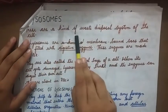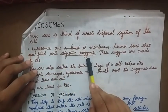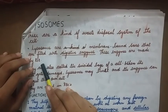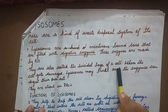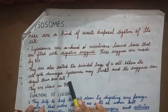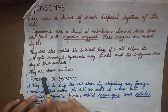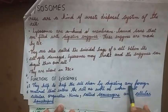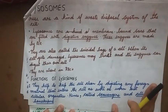Lysosomes are a kind of waste disposal system of the cell. These are membrane-bound sacs filled with digestive enzymes, and these enzymes are made by rough endoplasmic reticulum. Lysosomes are also called the suicidal bags of a cell — when a cell gets damaged, lysosomes may burst and the enzymes can digest their own cell, as the digestive enzymes are very powerful. Lysosomes are absent in RBCs. They help keep the cell clean by digesting foreign material as well as worn-out cellular organelles, hence called scavengers and cellular housekeepers.